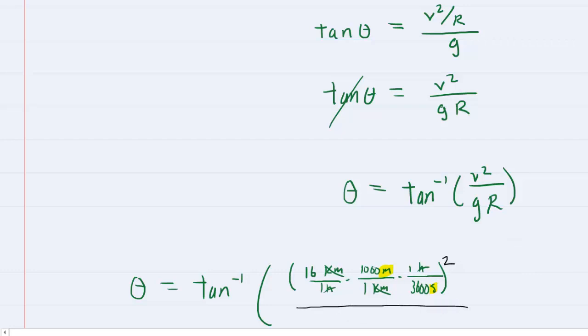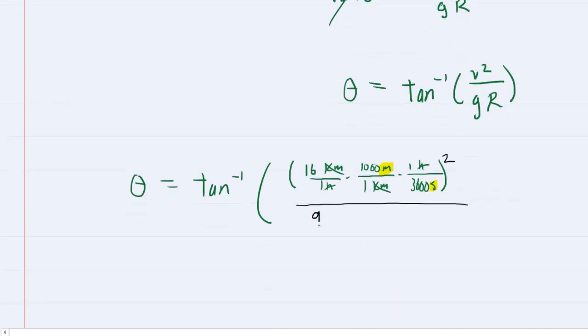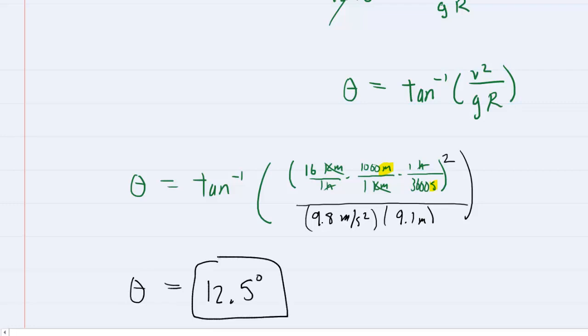Divided by g, which has the standard value of 9.8 meters per second squared, multiplied by the radius 9.1 meters. Set your calculator to degree mode and carefully type this in. You should get an angle of about 12.5 degrees. This is the correct answer to the question.